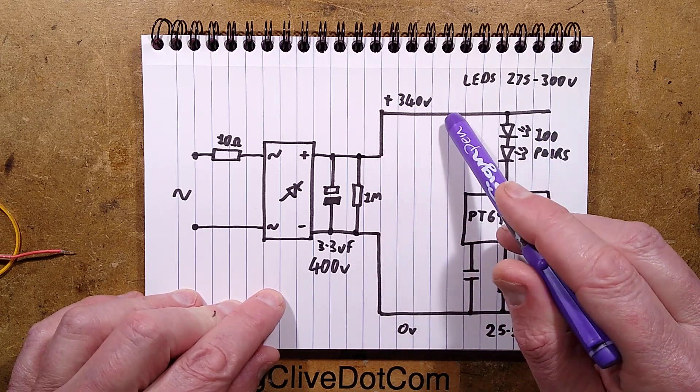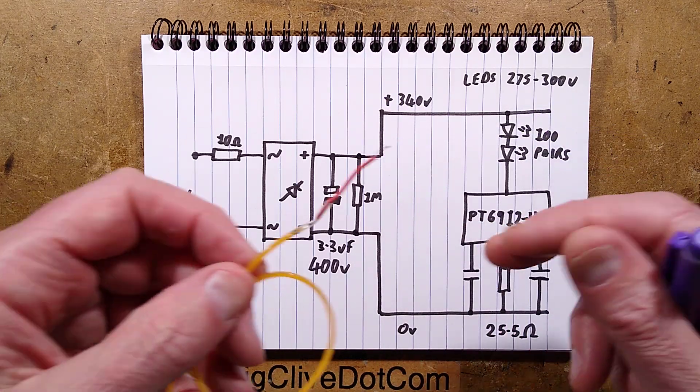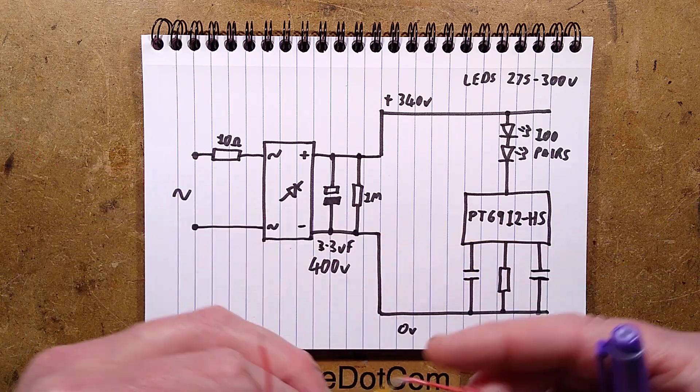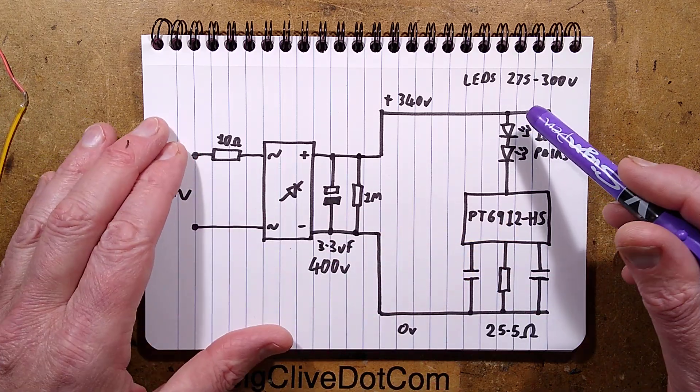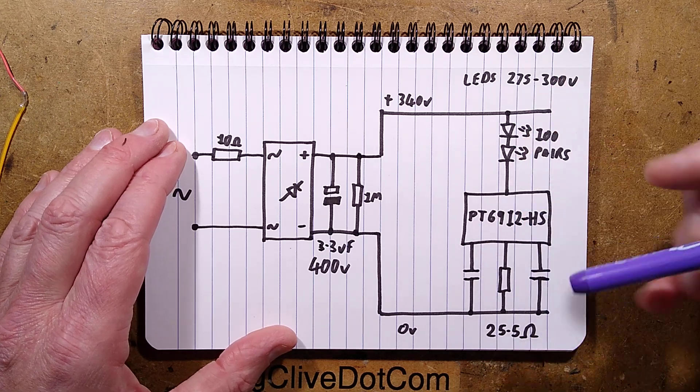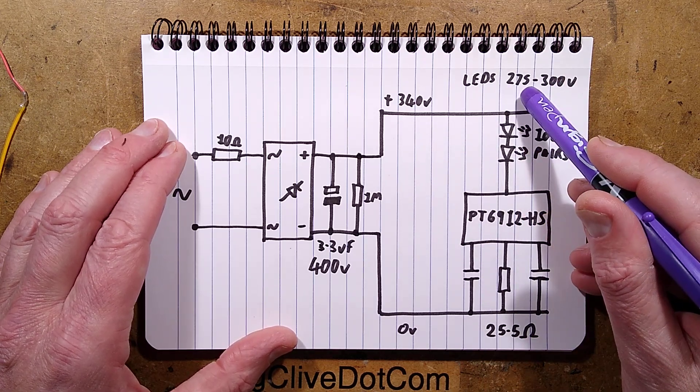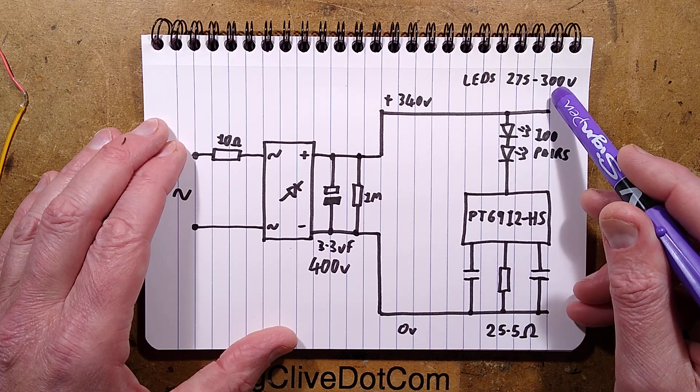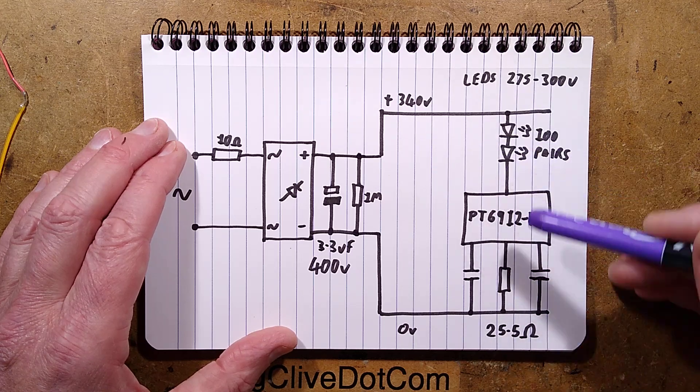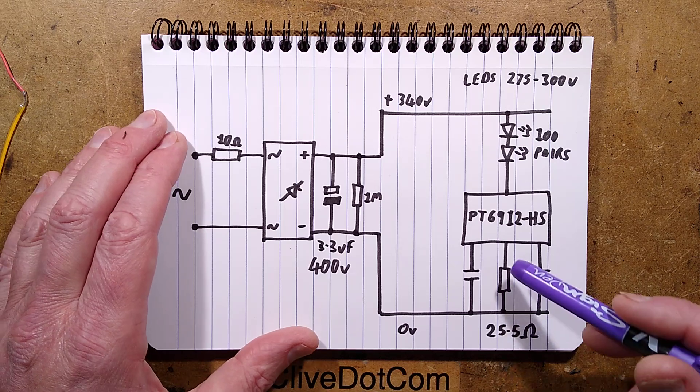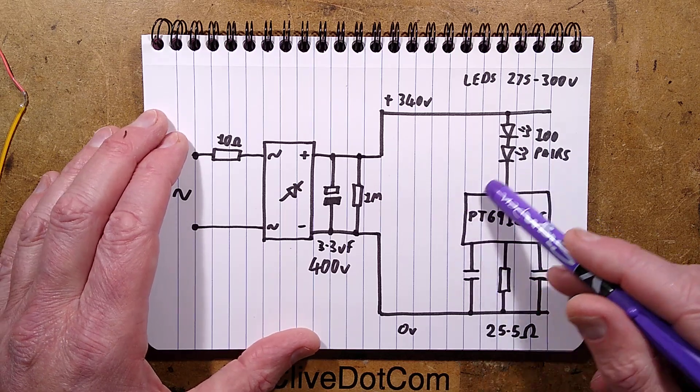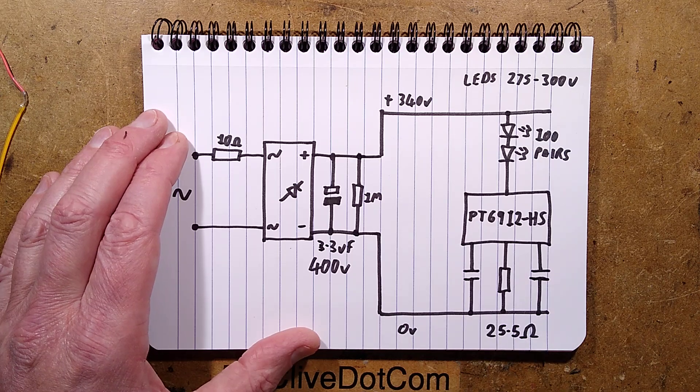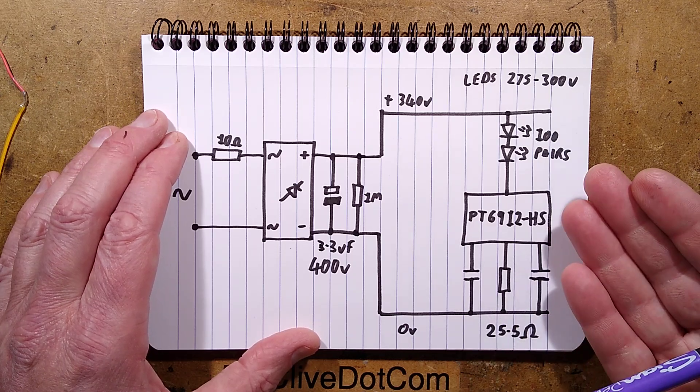It makes a 340 volt rail and then the LED filament has about 200 LEDs in it, but they're wired in pairs. So there's about 100 pairs and the voltage I tested it on a piece of test equipment with limited current and it said 275 volts. But depending on the current going through LEDs, it'll vary between that up to about 300 volts across the filament. That leaves 40 or 50 volts or so to drop across this chip here. There's the sensor resistor and there are the two mystery capacitors for the VDD and compensation if that's what they actually are for.